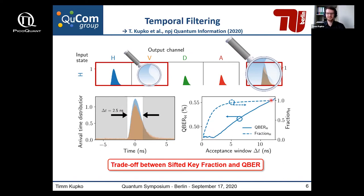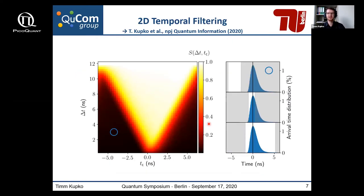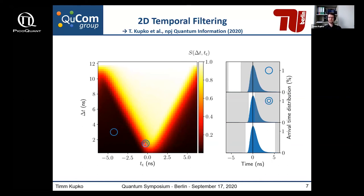There is a trade-off since we are also discarding some useful key material when filtering. We did this temporal filtering only around the maximum of the photon arrival time distribution. However, since we have a highly asymmetric shape of our photon arrival time distribution, it is more beneficial to do 2D temporal filtering — meaning we change the center position of the timing window and for each center position also change the acceptance time window width. If we are in a region of only noise, no secret key rate can be achieved, but if we filter too narrowly, the secret key rate is also not optimal since we discard too much sifted key rate. There is always a trade-off to find the optimal value.